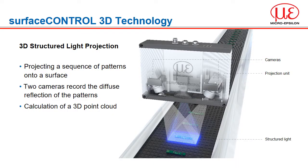Let us take a closer look at how we create the 3D information. The makeup of the sensor is a blue LED projection unit in the centre of the housing with two high-resolution cameras situated either side. This arrangement gives us a stereoscopic view of the target and because we look from both sides we are able to reduce shadowing caused by the single-sided triangulation principle.